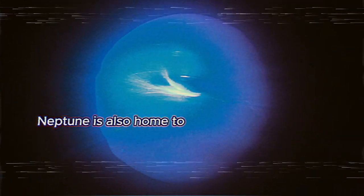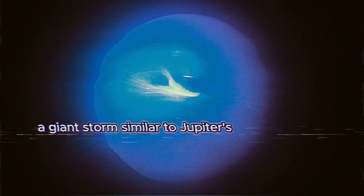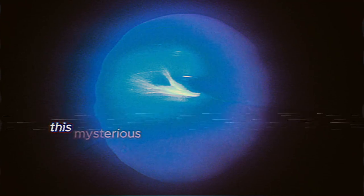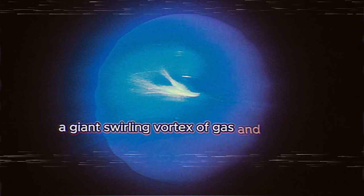Neptune is also home to the famous Great Dark Spot, a giant storm similar to Jupiter's Great Red Spot. This mysterious storm is a wonder to behold, a giant swirling vortex of gas and clouds.